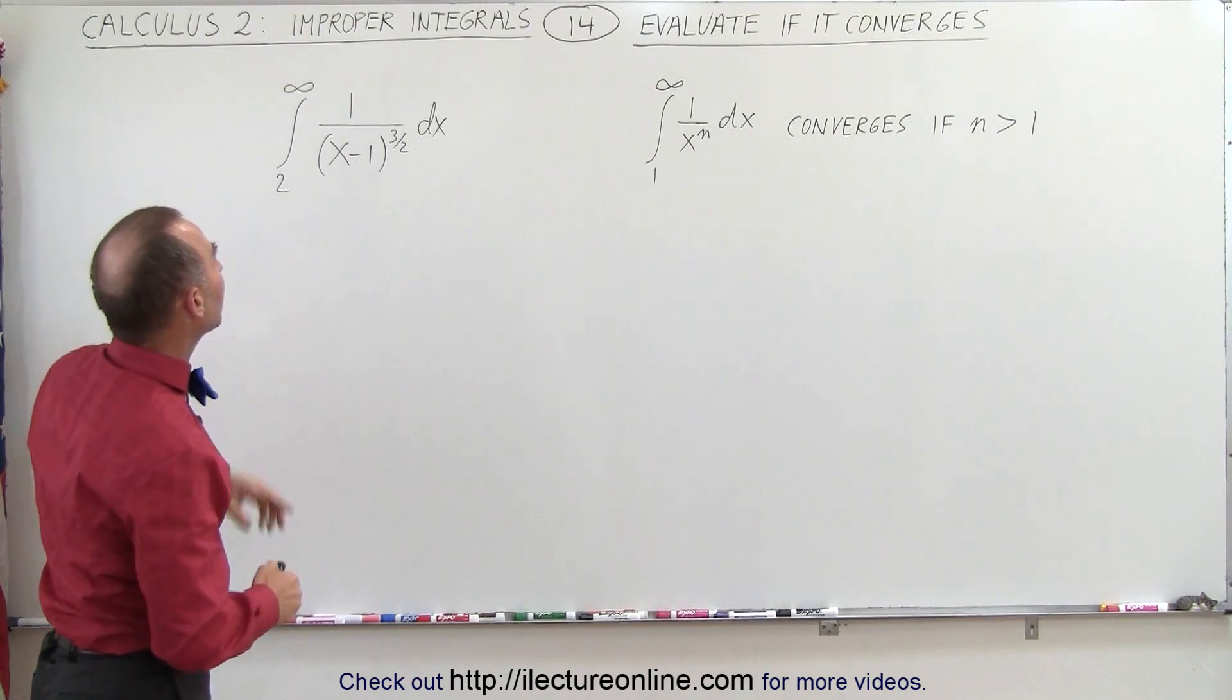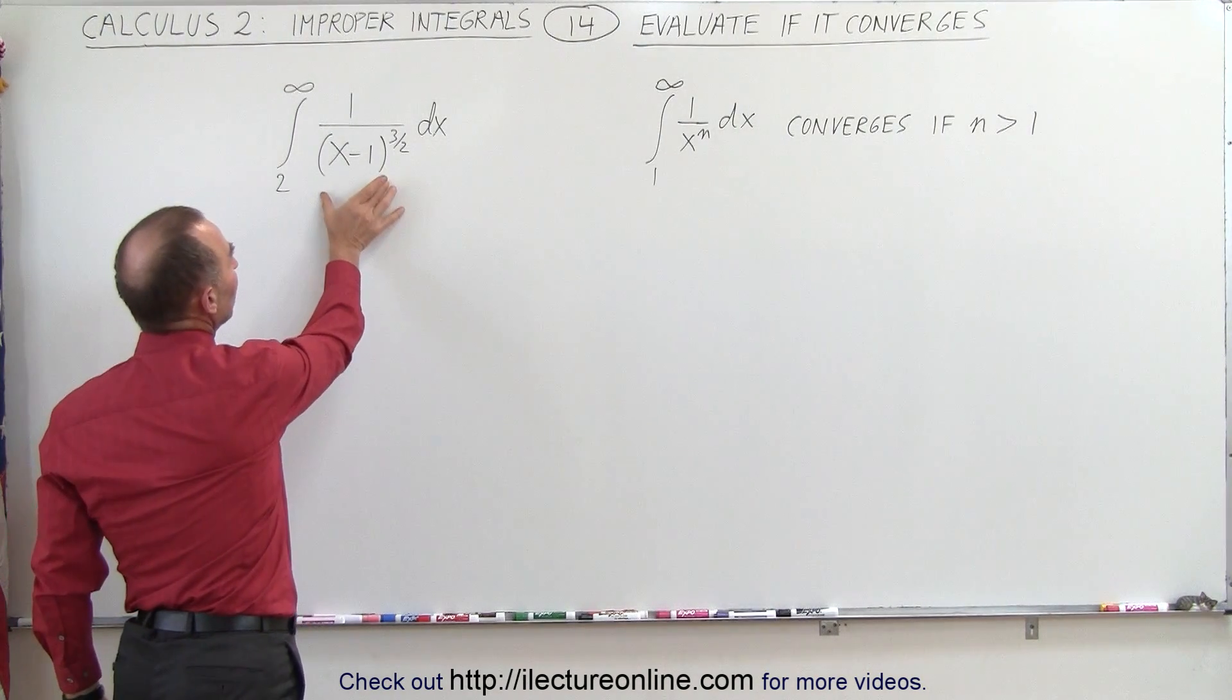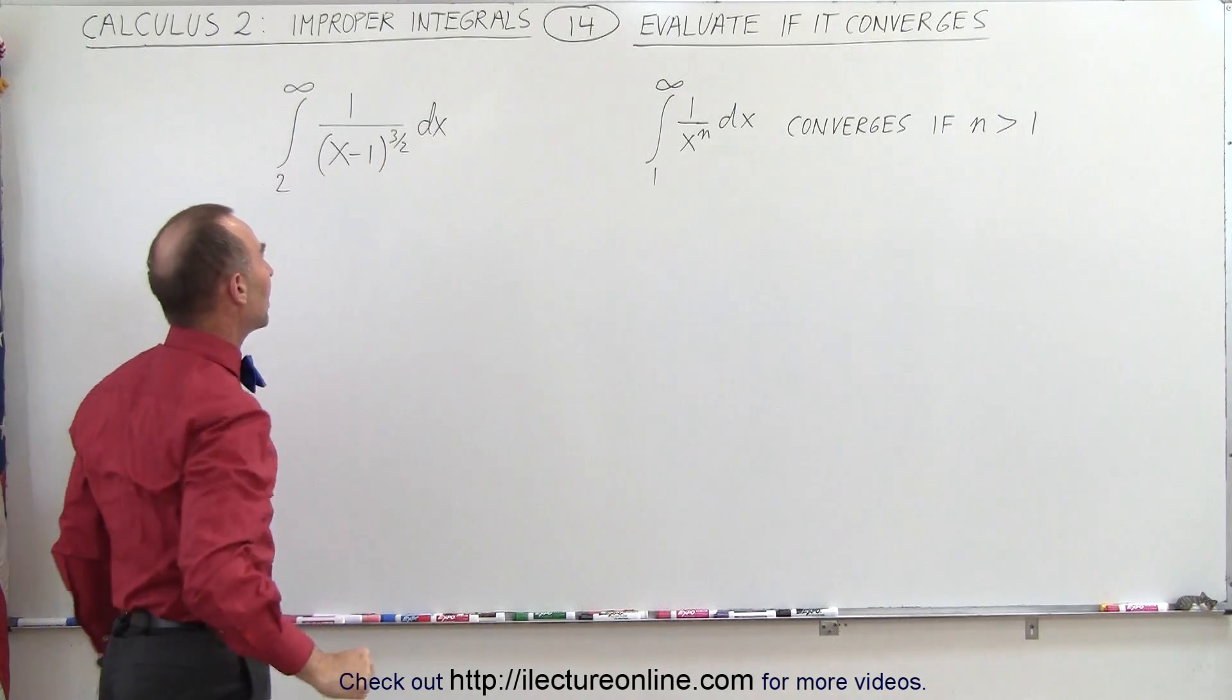So we're going to integrate from 2 to infinity the function 1 over the quantity x minus 1 to the 3 half powers.